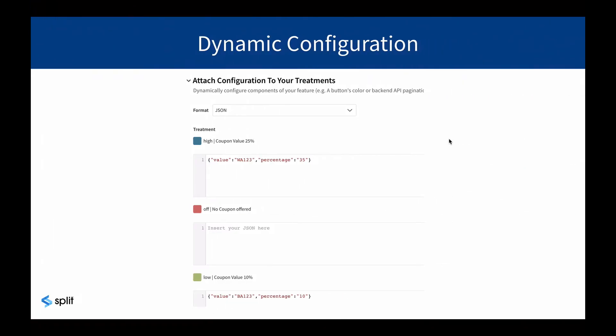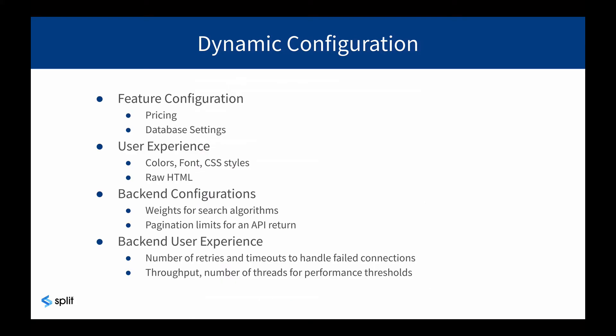It's pretty easy to conceive of dynamic configuration in the front-end, where you can make a change to the user interface or to a pricing setting. But it's also useful for back-end configurations. A very interesting use case that we've seen recently is weighting for a search algorithm. The customer had four different criteria for how they would return a user search, and each one was weighted differently. They played around with the weightings, setting different values over time, to determine which one provided the best results. Dynamic configuration gives you a tremendous amount of flexibility to change the user's experience or the way the system operates without having to go in and change code.